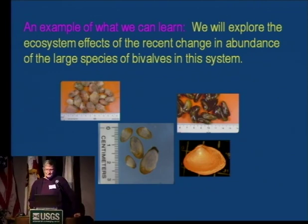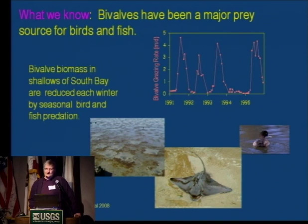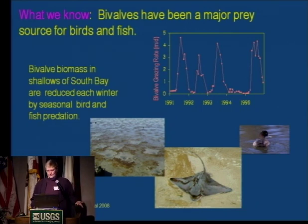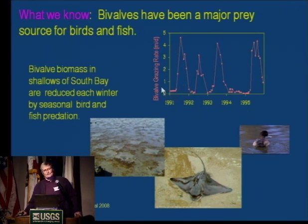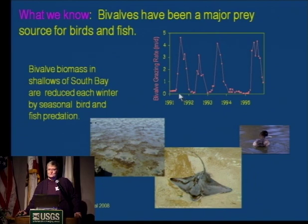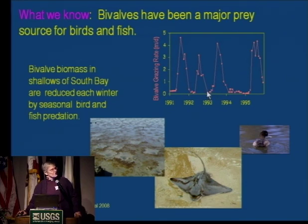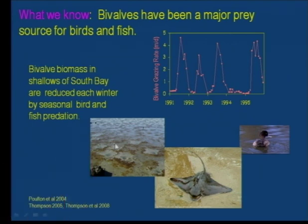We're going to talk about the bivalves because that's the work we've completed. We knew going in that bivalves are heavily influenced by predators. This is a plot of bivalve biomass from 1991 through 1995 showing grazing rate as a function of biomass. Every year it goes to essentially zero in January, starting to drop off in October. John Takakawa explained how many clams a bird can eat, which was sobering. There's also predation from bat rays — you can see feeding holes on the mud flats with shells from clams they've been eating.